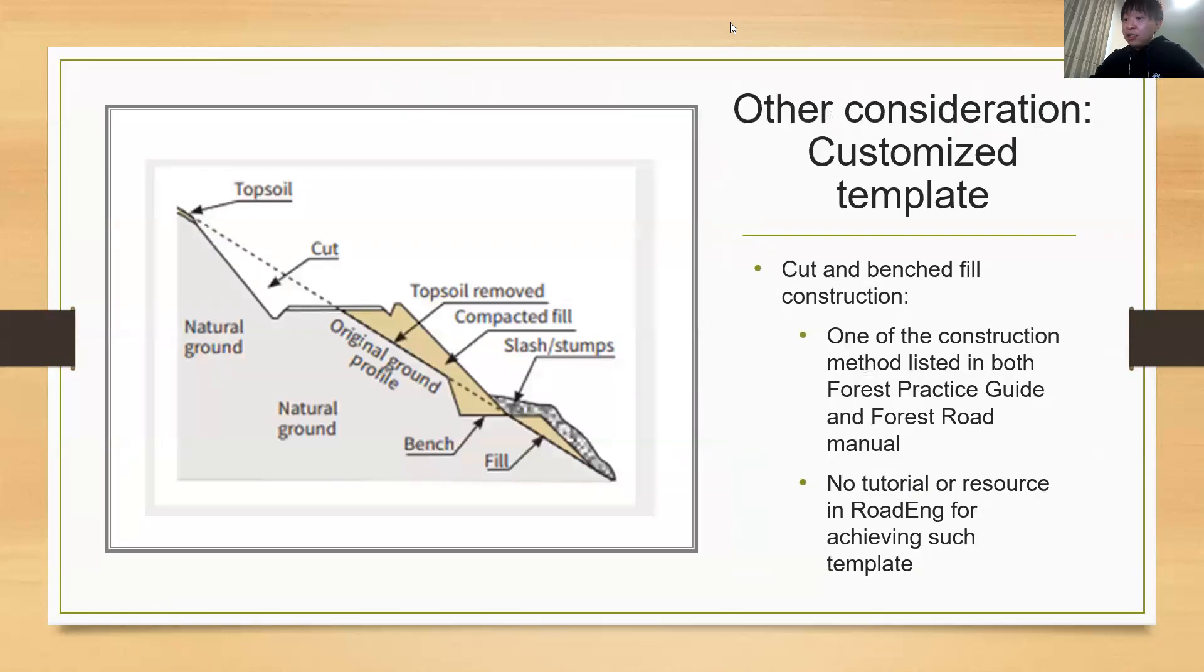It was also found that RoadEng does not contain a built-in template for cut and benched fill construction. This is the major construction method in steep terrain that is demonstrated in both forest practice guide and forest road manual. It is challenging but may be achieved by using the customized template function in location module. The software has provided very minimal resource for users to learn how to use such functions. The only resource you can find is a single web page that introduces the function but no further instruction on the specification of how to use the function.